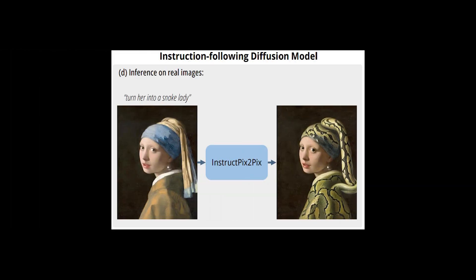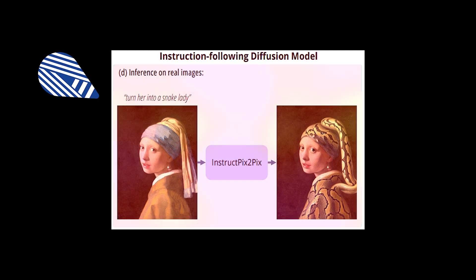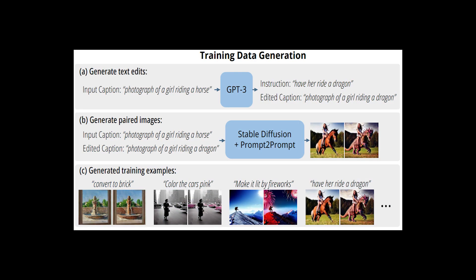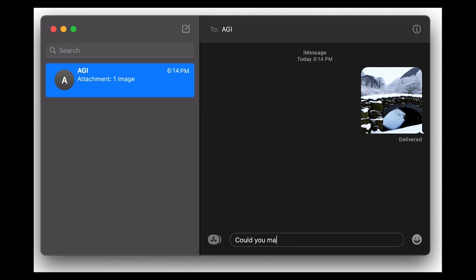Here, we don't only want to generate an image, but we also want to control it with our initial image and only edit what our text says. To do that, they modify the existing Stable Diffusion architecture to allow for the initial image to be sent along with the text, as the Stable Diffusion architecture can already take text as conditions to generate images. Then, they carefully calibrate the training process for the model to respect both the image and our desired changes. It's finally trained by trial and error to replicate our paired images. And voilà, you get InstructPix2Pix, which allows you to edit your images with simple text instructions.